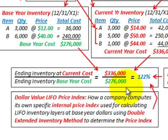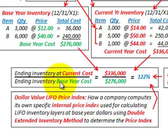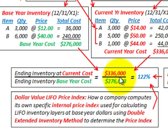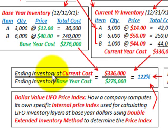What we're talking about with this price index: we look at our ending inventory at the current cost divided by the ending inventory value at the base year cost. We take the current cost of our ending inventory, divide it by the base year cost of our ending inventory, and we come up with a price index — the increase in prices for the year.